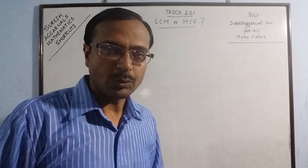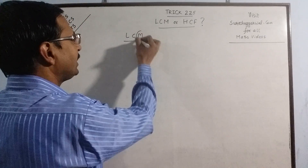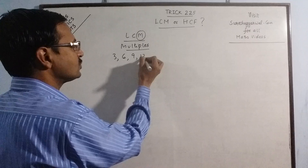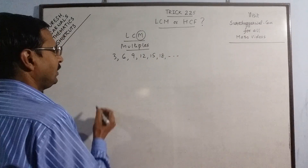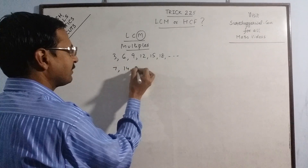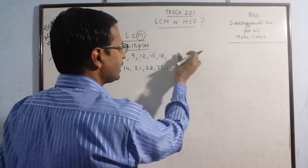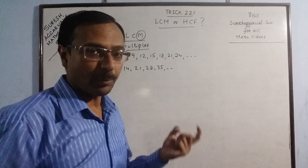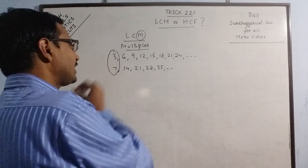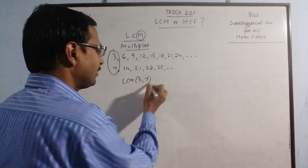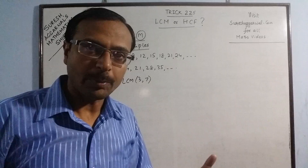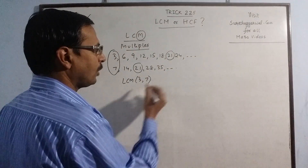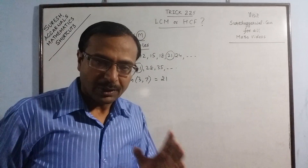When we talk of LCM, it involves the letter M, and M means multiples. Multiples of 3 are 3, 6, 9, 12, 15, and so on. If you take another number, say 7, multiples of 7 are 7, 14, 21, 28, and so on. When you talk of LCM, we need to find a number which is common in these multiples. The first common multiple gives you the LCM — 21 comes first, so 21 is the LCM of 3 and 7.